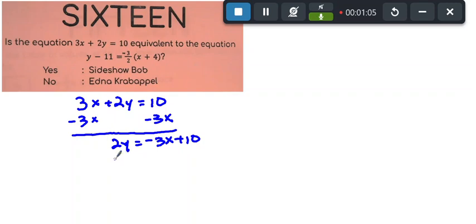And then if I divide both sides of the equation by 2, this gives me y equals negative 3 halves x plus 10 over 2.